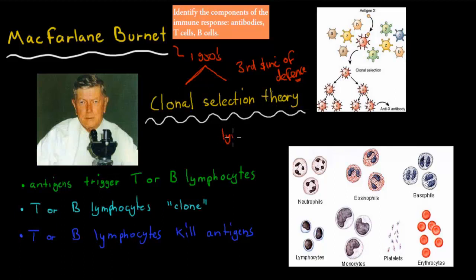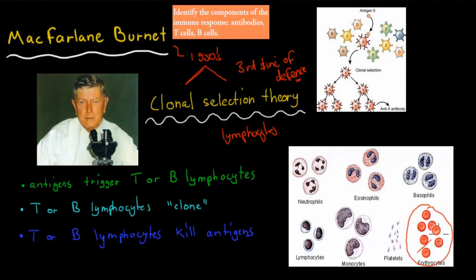The lymphocytes are these special types of blood cells. We have different types of white and red blood cells. We've got the erythrocytes, which are the red blood cells. The platelets are there to clot and help wound healing. Then we're left with these — these are the white blood cells.